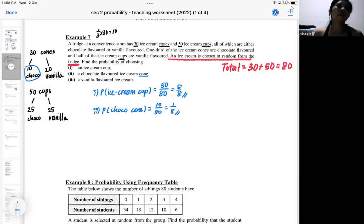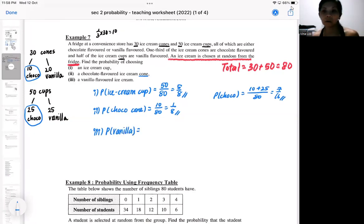If the question didn't specify chocolate cone, if the question specified simply a chocolate ice cream, then it could also be the 25 here. So if the probability is just a chocolate ice cream, then it will be 10 plus 25 over 80. So that's 35 over 80. So we've got to read carefully whether it's a chocolate flavored ice cream or just a chocolate cone. The last one, probability that is a vanilla. So as long as it's a vanilla, it doesn't matter whether it's a cone or cups. So we got 20 cones and 25 cups. So it'd be 20 plus 25.